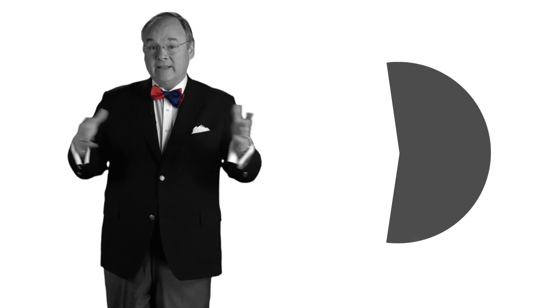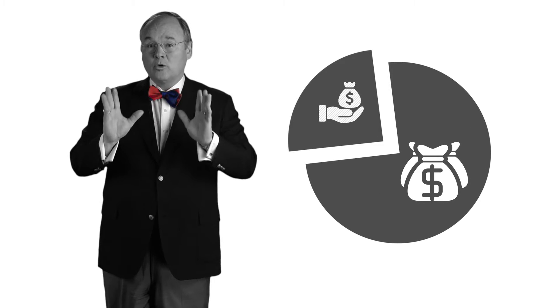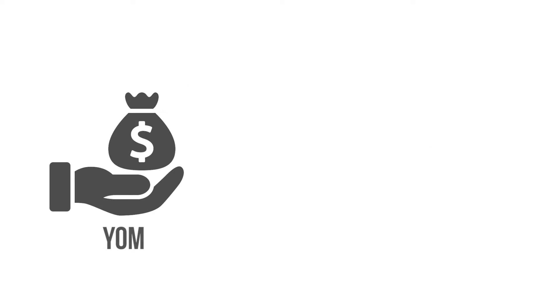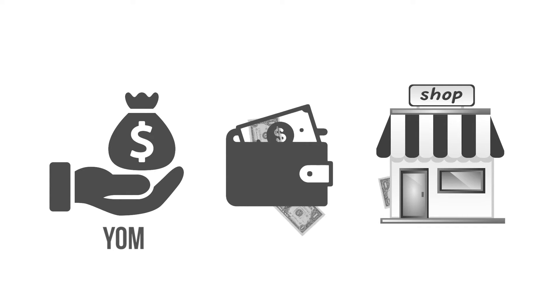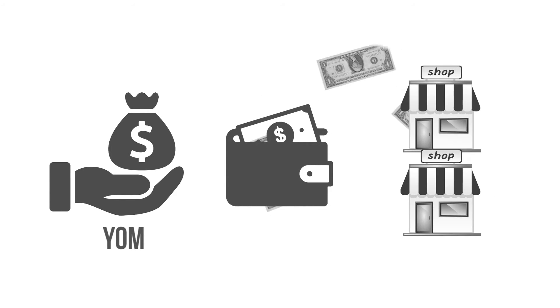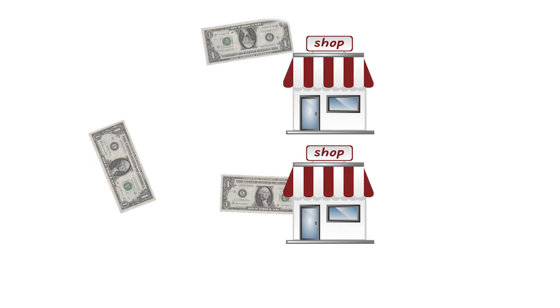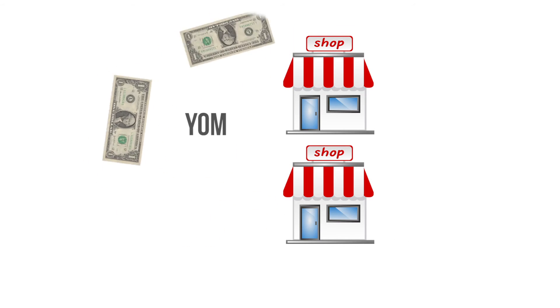If you need added financing, you probably can't get 100% financing, which means you will require more YOM — your own money — to grow. YOM can come in the form of added cash that you contribute to the business, or the diversion of free cash flow from the business into your expansion plans. Since you're going to own the company, that free cash flow becomes YOM — it's your own money.